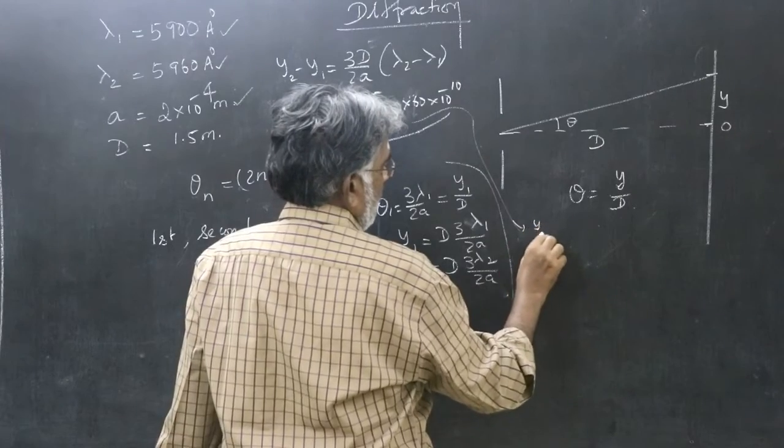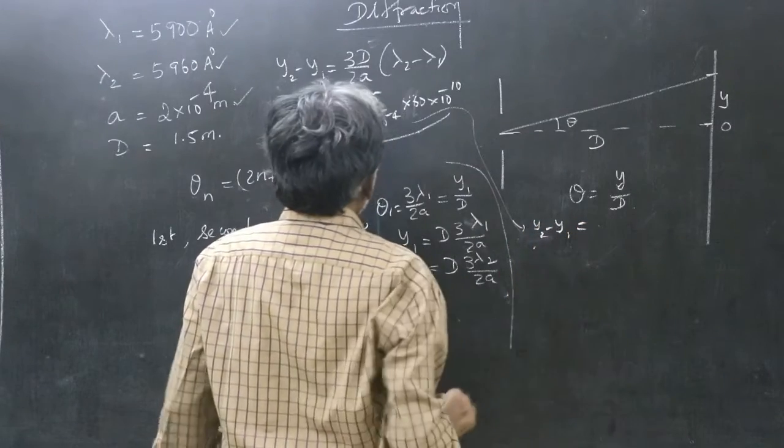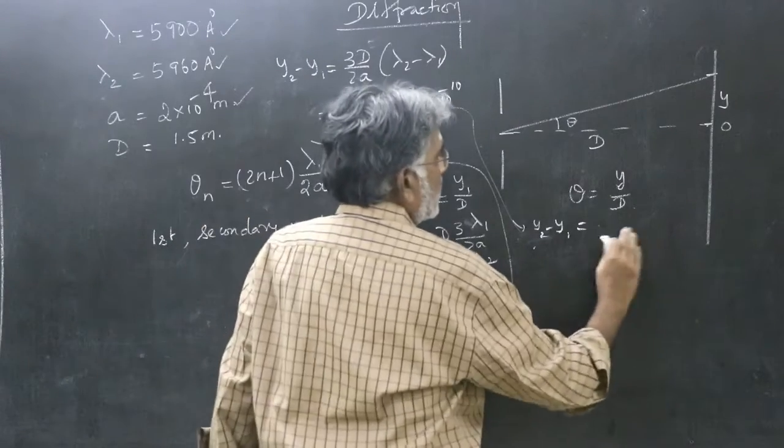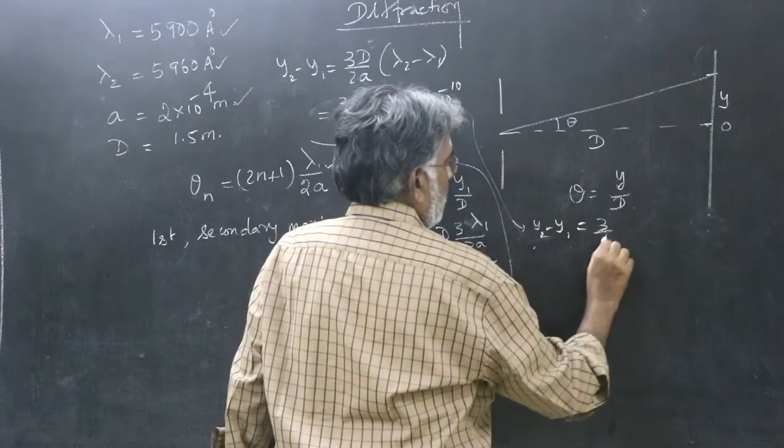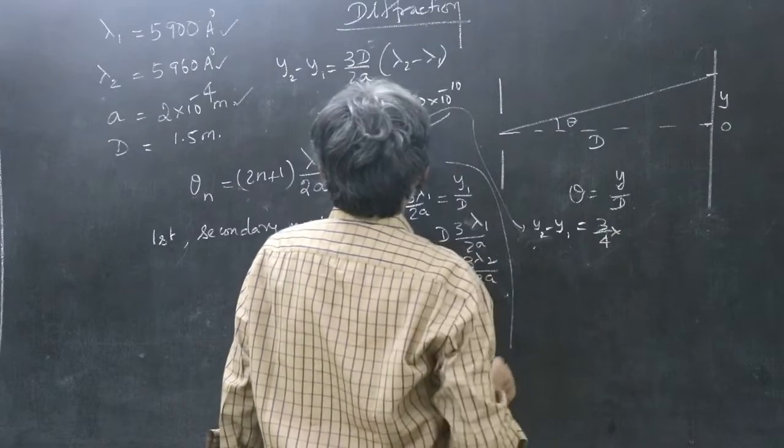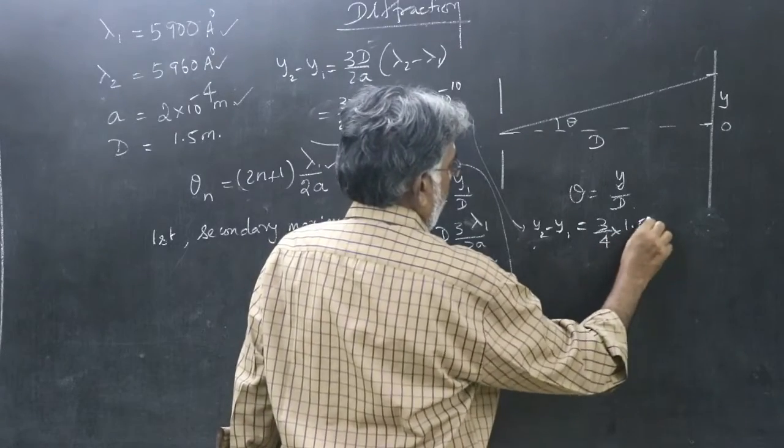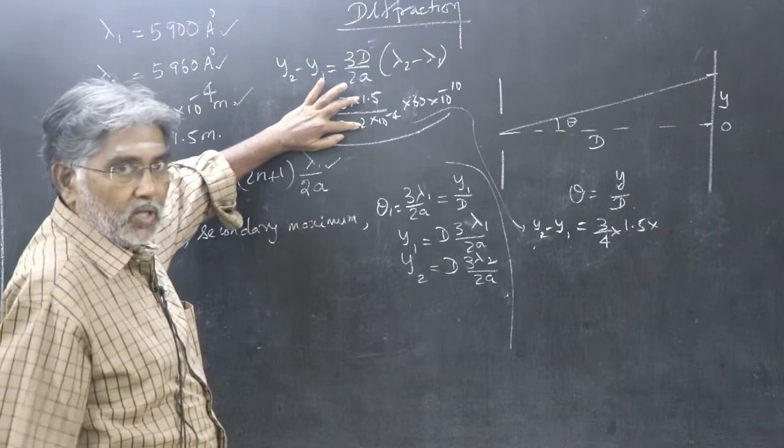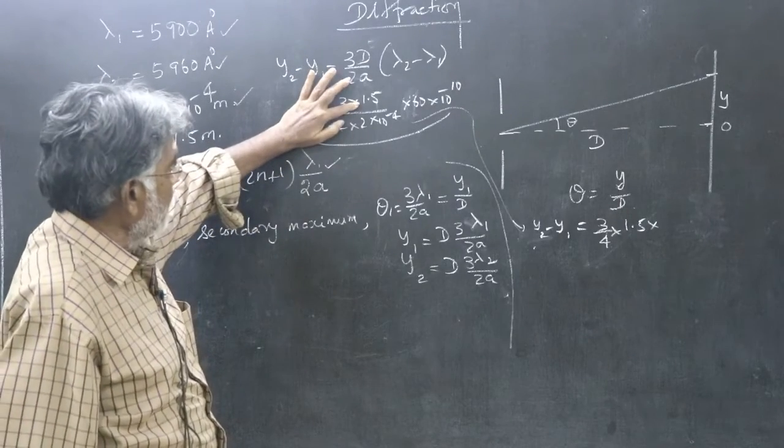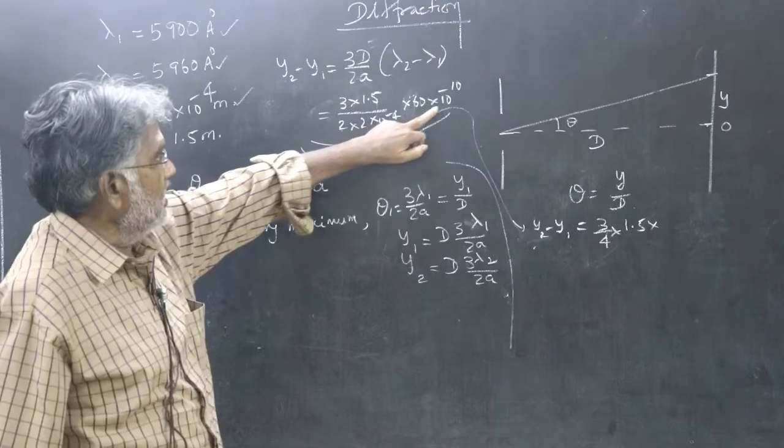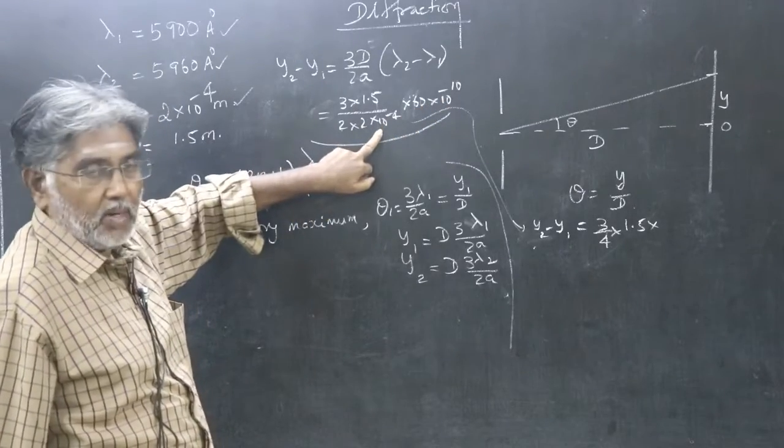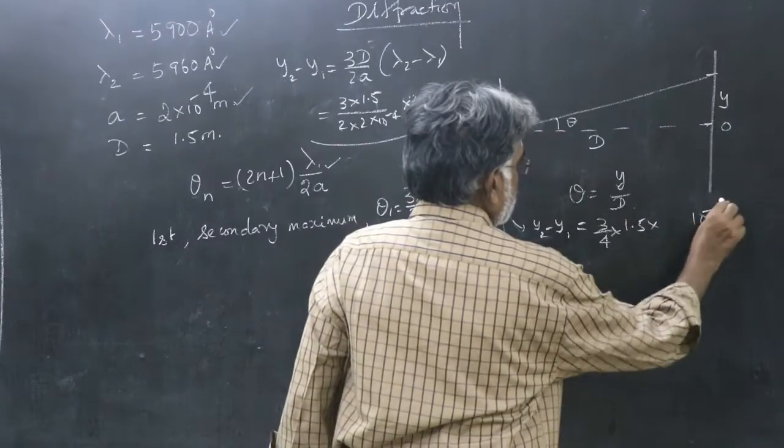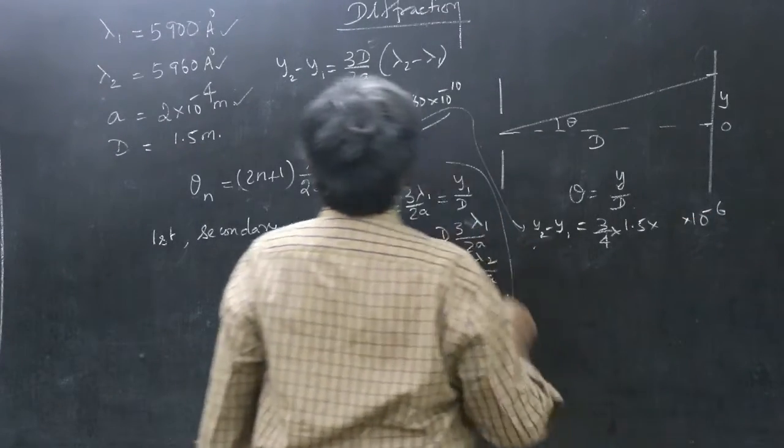y2 minus y1, 3 by 4 into 1.5 into 3, 2 into 2, 4 in the denominator, 1.5 in the numerator, into 60, 10 power minus 10, but here you have 10 power minus 4, take it to the numerator. So, it will be 10 to the power of minus 6, then 60.